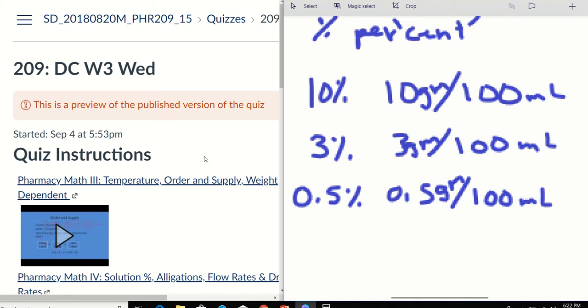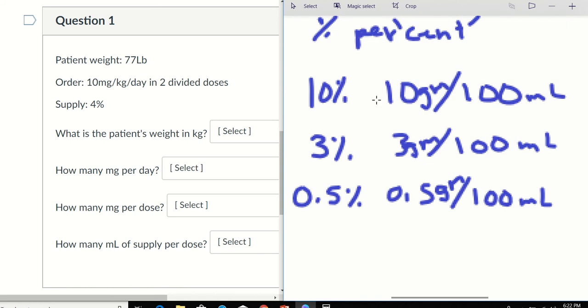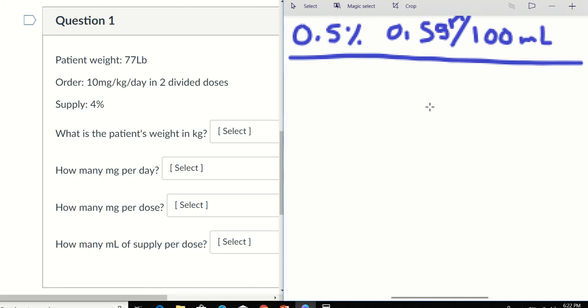So let's take a look at this example for tomorrow's DC. Alright, so basic steps for percentages. So the first step is we've got to convert. 77 lbs divided by 2.2. How many is that? 35. 35 kgs.